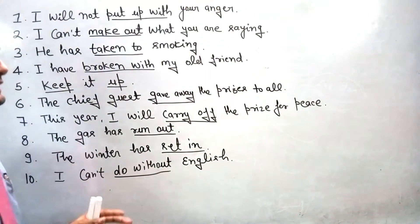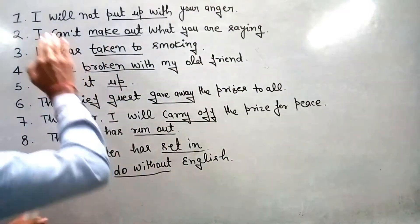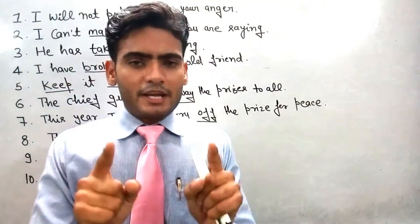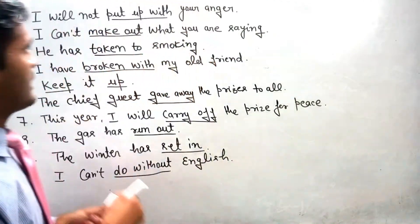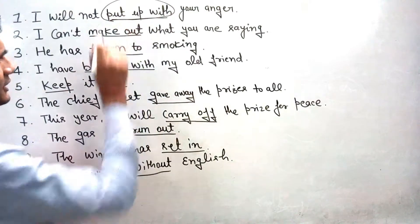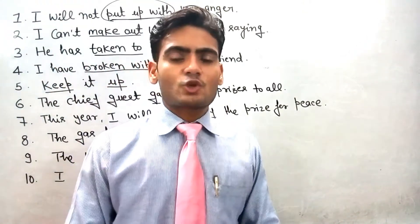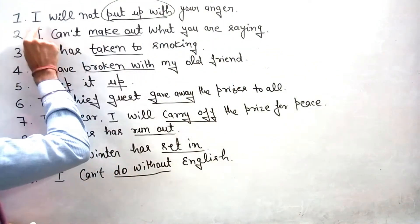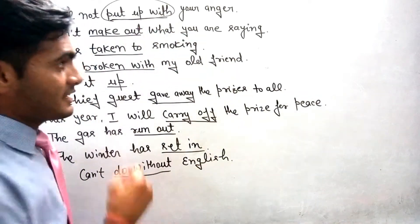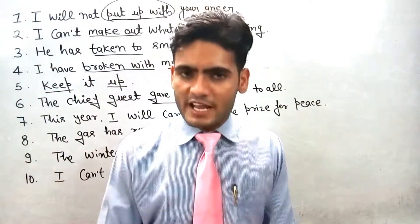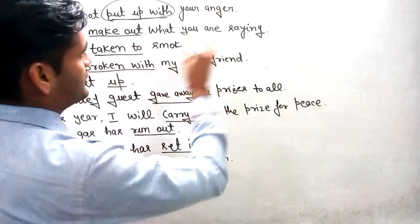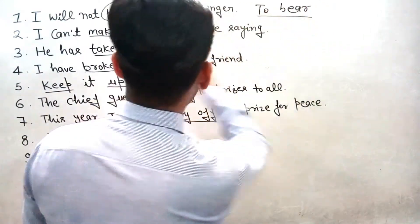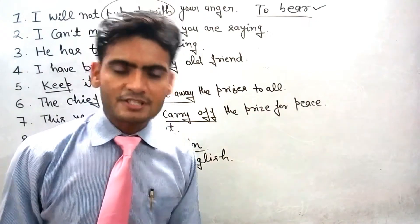पहला sentence है: 'I will not put up with your anger.' यहाँ पर phrasal verb है 'put up with', जो मैंने underline की हुई है। Put up with का मतलब होता है किसी चीज को tolerate करना, यानि bear करना या सहना। तो इस sentence का मतलब है: मैं तुम्हारा गुस्सा सहन नहीं करूंगा। Put up with means: to bear.